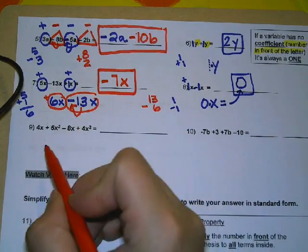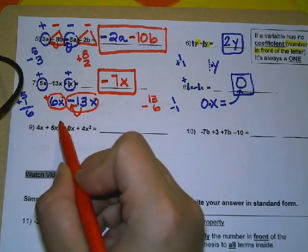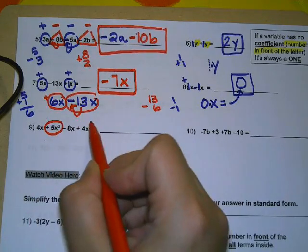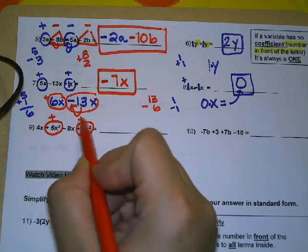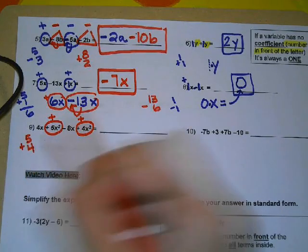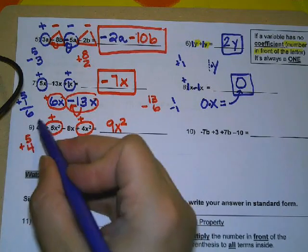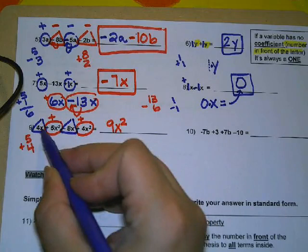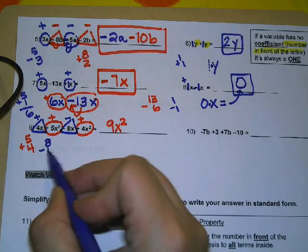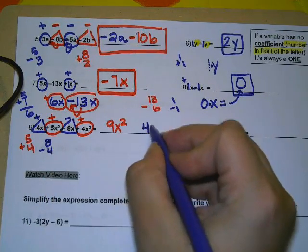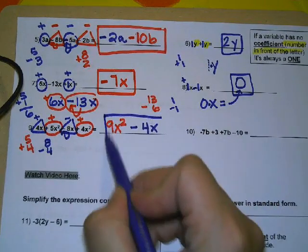Example 9: all terms have X, so we look at exponents. The highest exponent goes first. The two X squared terms match and are both positive, so we add: the result is 9X squared. Then we combine 4X with negative 8X — positive and negative, different signs, so we subtract: 8 minus 4 is 4, and since 8 is larger and negative, we get negative 4X. Final answer: 9X squared minus 4X.